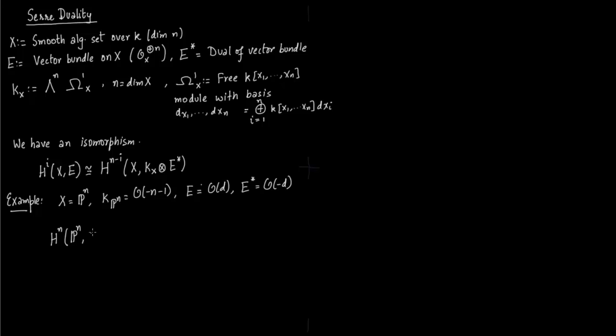So then you have Hn of Pn, O(d). So you are taking i as n, will be equal to H0 of Pn, O(-n-1-d). So this we have seen before. You can check this theorem again in Daniel Perrin's book, Algebraic Geometry. So this you have seen multiple times before. We are just confirming the result.